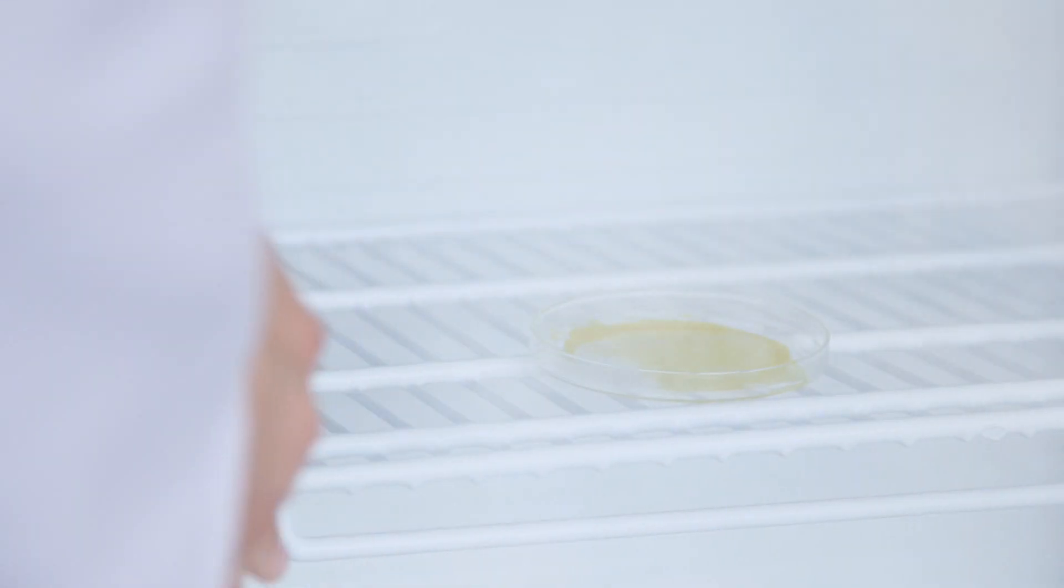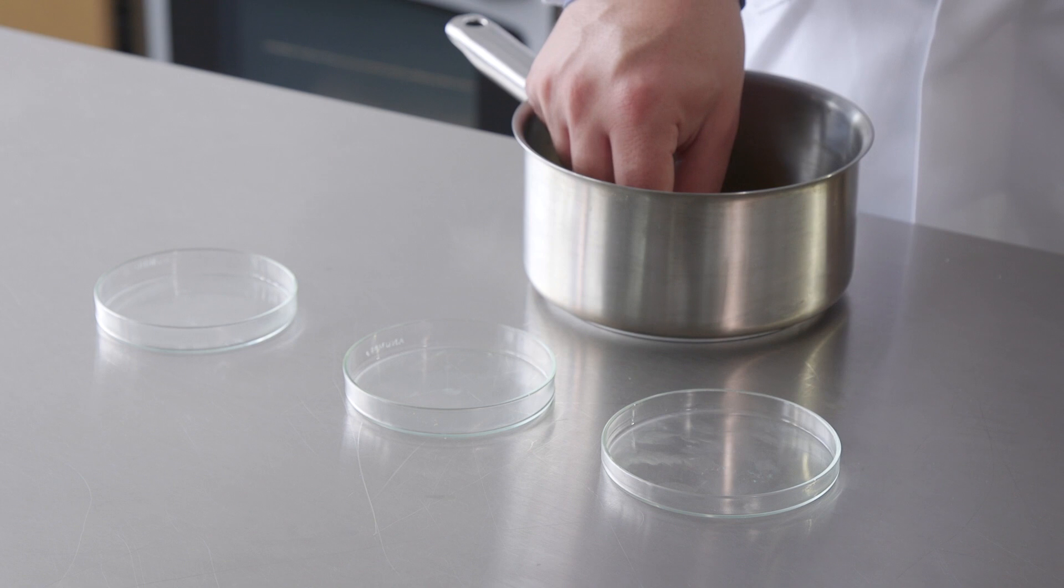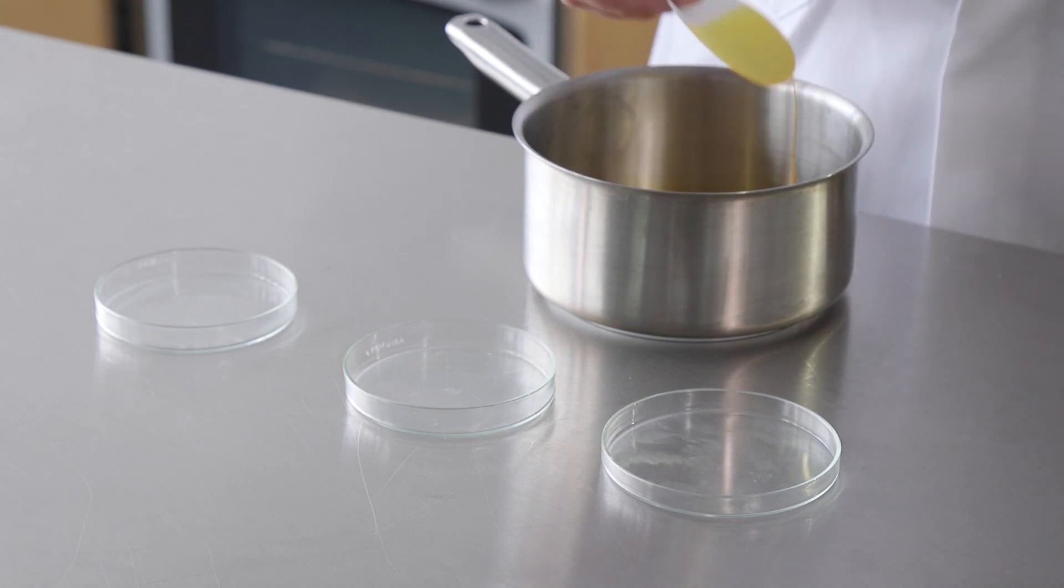Dish C is placed in the fridge and Dish D in an incubator set at around 40 degrees centigrade. Both of these will also be in the dark once the doors are closed. Leave these where they are for four to five days.